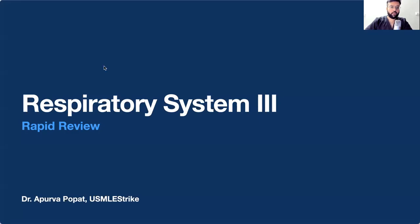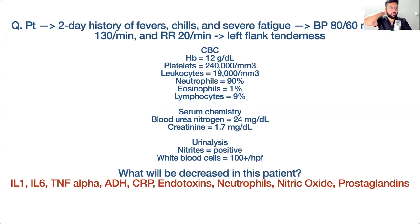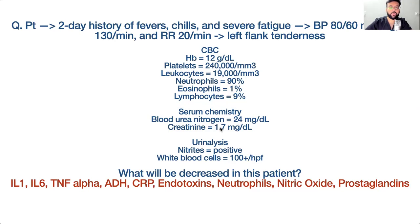A patient presents with a two-day history of fever, chills, and fatigue. Blood pressure is 80/60, pulse 130, respiratory rate 20. There is left flank tenderness, leukocyte count of 19,000 with neutrophilia, BUN 24, creatinine 1.7, nitrites positive on urinalysis, and a lot of WBCs in the urine. We need to compare all these parameters.